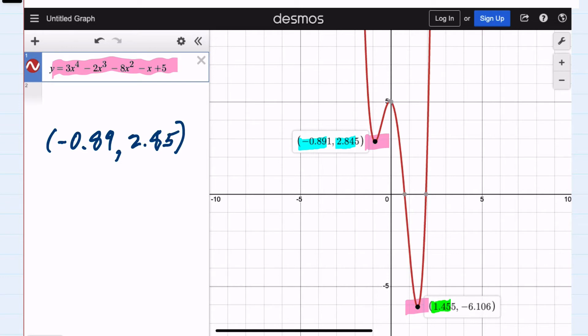The second local minimum is further down here and it has the x coordinate 1.45 with another 5 behind it, so again I would round up to 1.46. And the y coordinate negative 6.10, but the 0 has a 6 behind it, so that would also round up to negative 6.11. So these are our two local minimums.